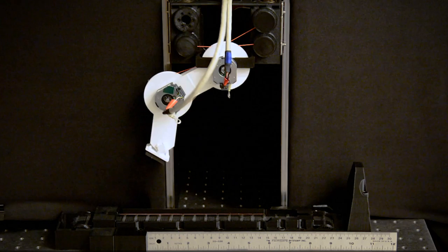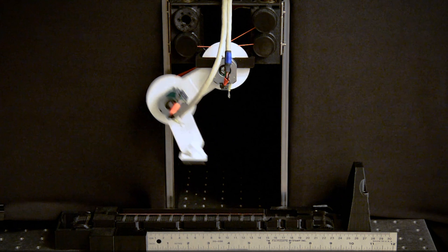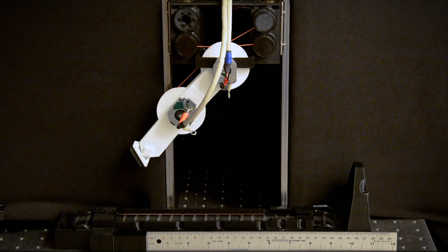So our system will first start with a random set of movements to figure out how to control its body. It's very similar to what babies do when they're doing what we call motor babbling—they try to pull different muscles and figure out how to control their limbs.